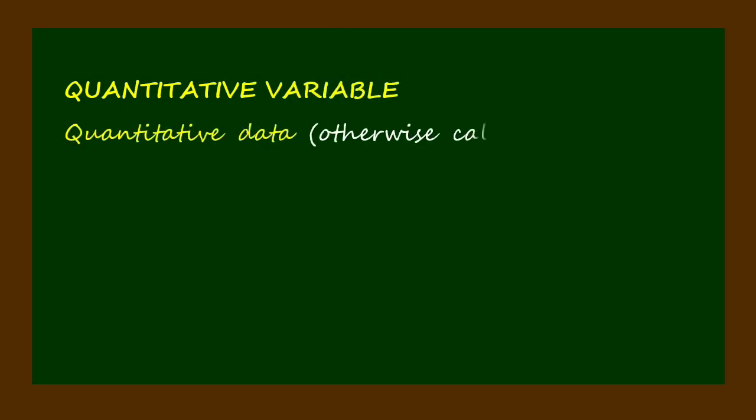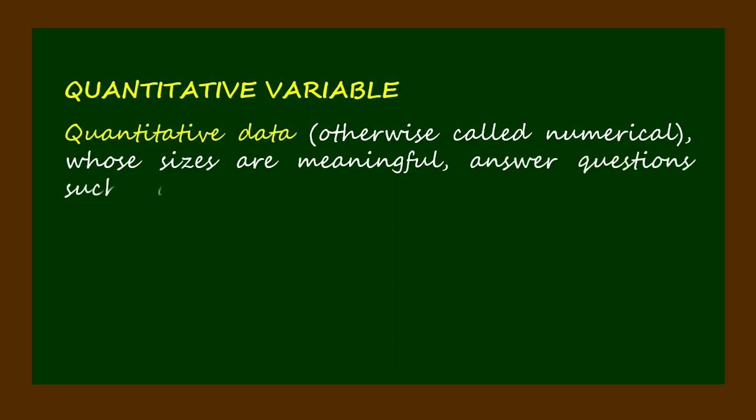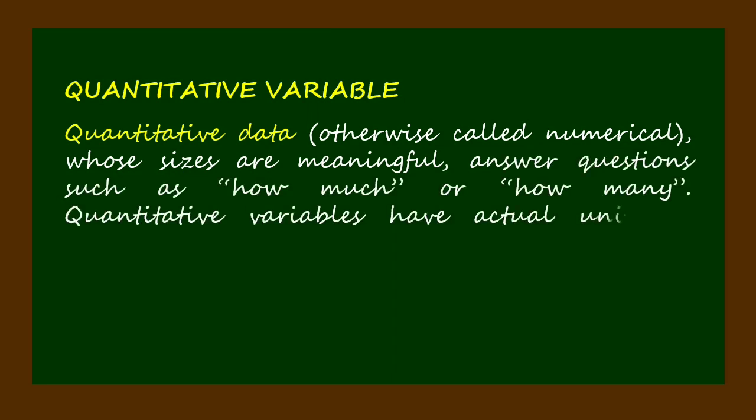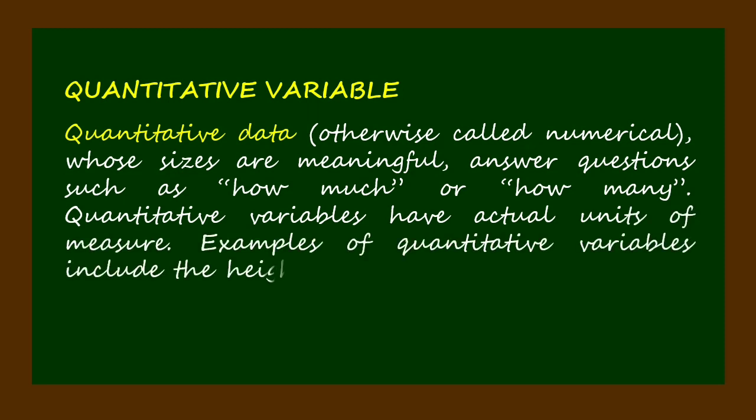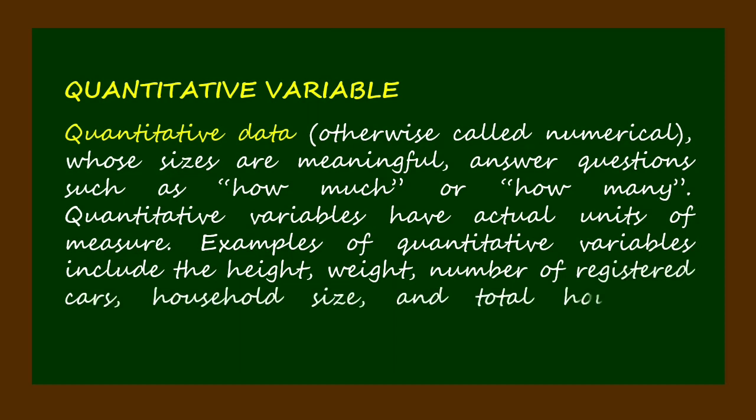Quantitative data, otherwise called numerical, whose sizes are meaningful, answer questions such as how much or how many. Quantitative variables have actual units of measure. Examples include height, weight, number of registered cars, household size, and total household expenditures or income.